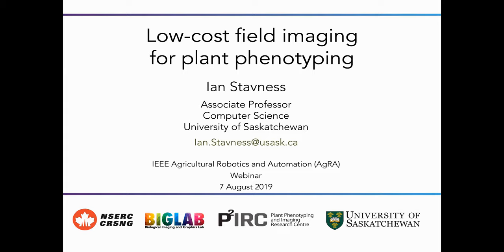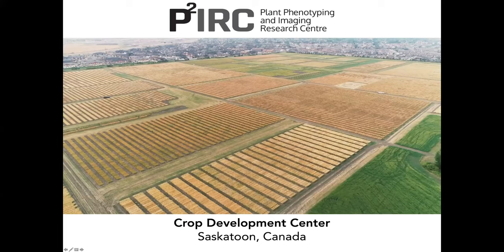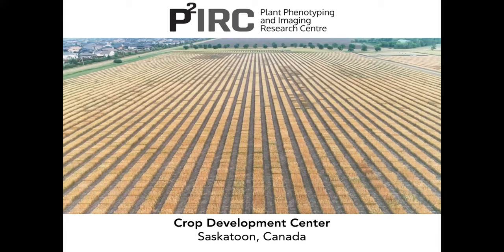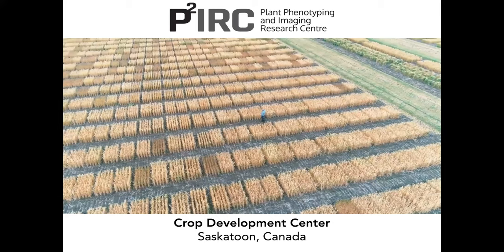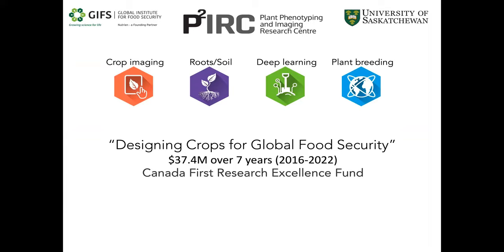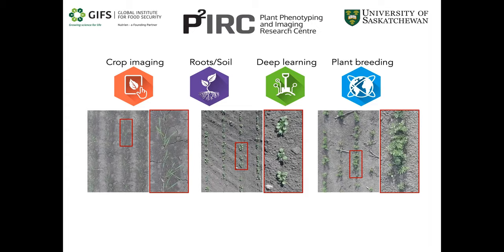Here's the video showing one site of a wheat breeding program — the main idea is just to show the valuable data resource we're fortunate to have. Based around the strong agricultural science here at Saskatchewan, we've developed a phenotyping center called PERC — the Plant Phenotyping and Imaging Research Center. PERC is funded from a national grant in Canada called the Canada First Research Excellence Fund, and we're transitioning to the second phase of this center, focusing on four main projects: crop imaging, analysis of roots and the soil microbiome, and a group I lead using deep learning to do image analysis.